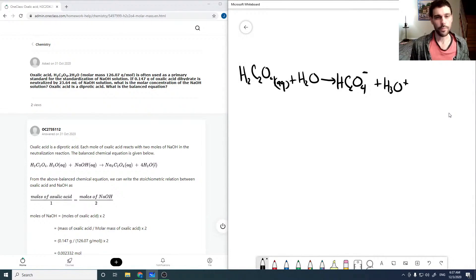But it's a diprotic acid. Yeah, so that's given in the question. So it's a diprotic acid. So then we also have HC2O4 minus going to C2O4 2 minus.